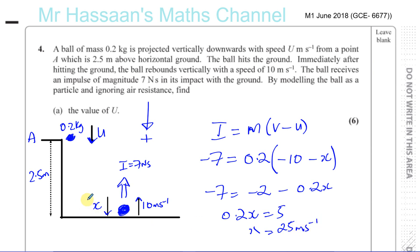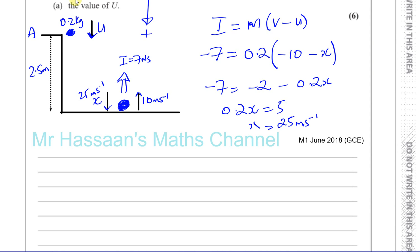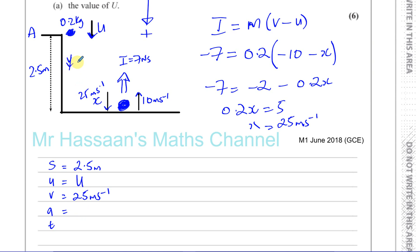Now I know x is 25 meters per second — the speed with which it hits the ground. I can use the SUVAT equations to find u, the speed with which it was projected. I know constant acceleration due to gravity, taking down as positive. The displacement S is positive 2.5 meters, final speed V is 25 m/s (positive, going downward), acceleration A is 9.8 m/s². Time T is not needed, so I'll use V² = U² + 2AS.